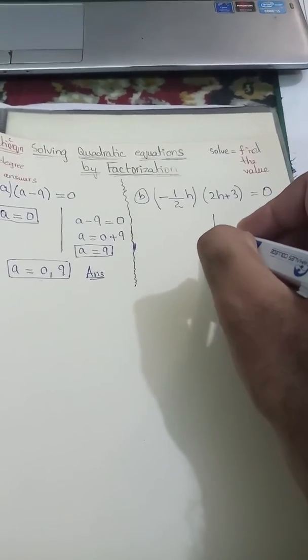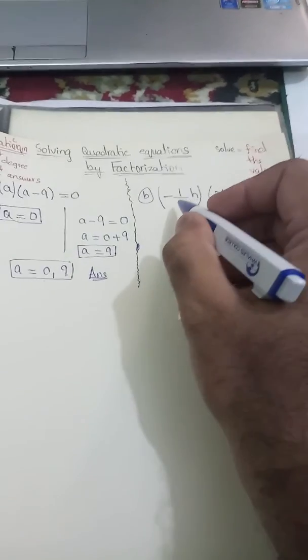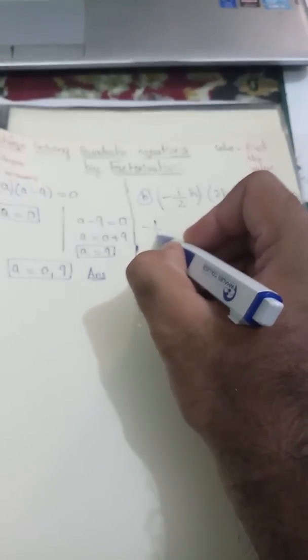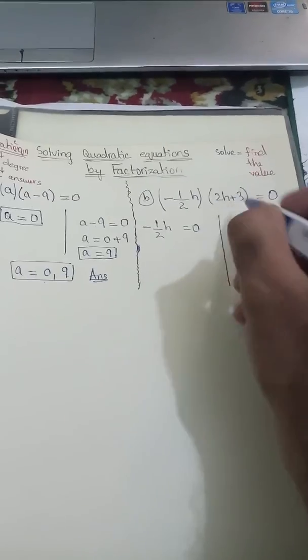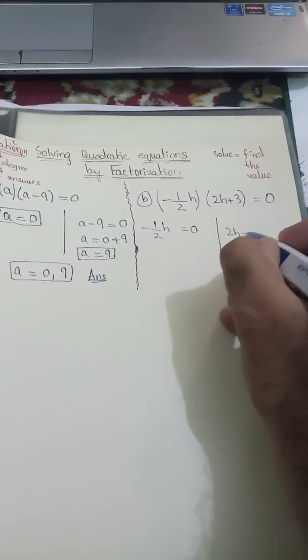We'll find the value of h. First, we'll use this bracket: -½h will be equal to 0. And then I will take this bracket, that is 2h + 3, and I will put this bracket equal to 0.